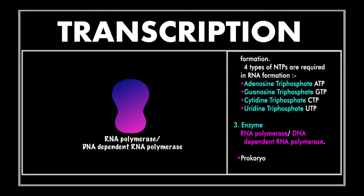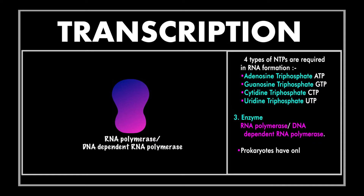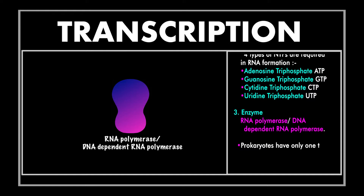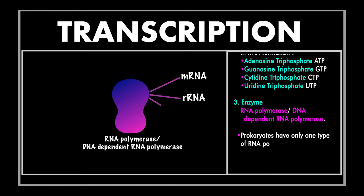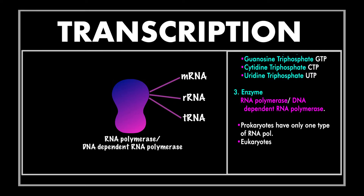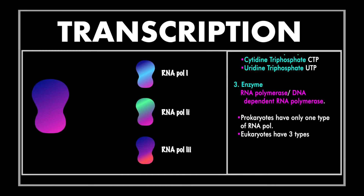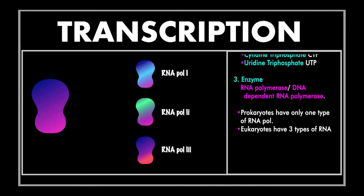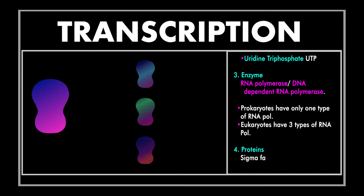Certain enzymes are also required. The enzyme RNA polymerase, also called DNA-dependent RNA polymerase, is responsible for the addition of NTPs for RNA formation. Prokaryotes have only one type of RNA polymerase which transcribes all three types of RNA — mRNA, rRNA, and tRNA — while eukaryotes have three types: RNA polymerase 1, RNA polymerase 2, and RNA polymerase 3, which perform different tasks.